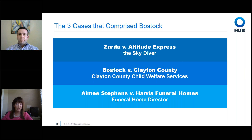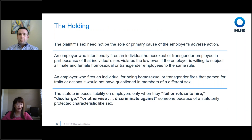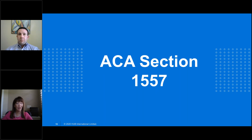The Bostock opinion consolidated three cases: Zarda, Bostock, and Amy Stevens. Both Zarda and Bostock were homosexual males who came out to their employers and subsequently lost their jobs. Amy Stevens was an employee originally hired as male who transitioned while working for Harris Funeral Homes. The court found that sexual orientation and transgender are protected classes under Title VII, and that an employer cannot single out an employee based on transgender status or sexual orientation and take adverse action against them.